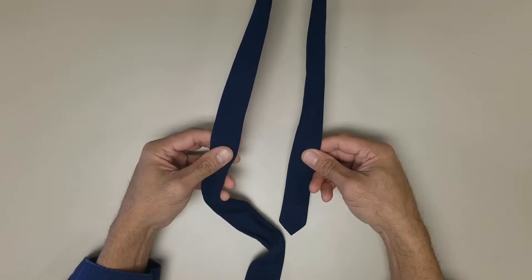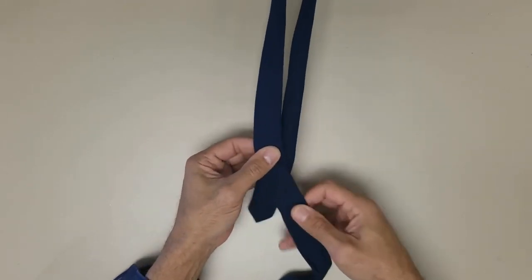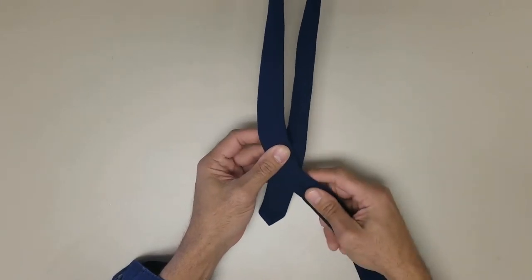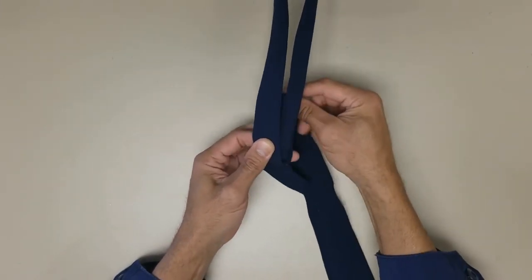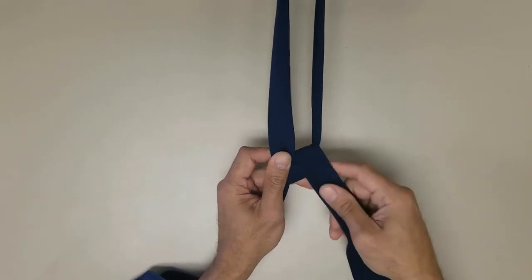Only move the active wide end. Move the wide end over the small end to the left, up into the neck loop from underneath, and down to the left.